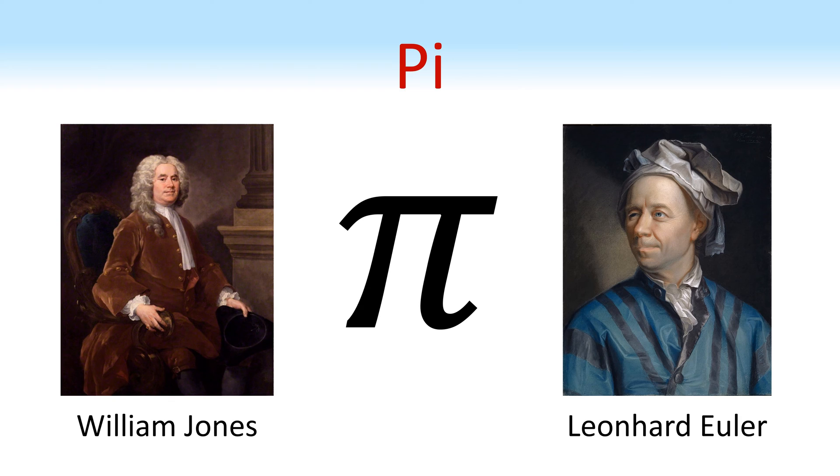The symbol we use for pi was introduced by the Welsh mathematician William Jones in 1706, but it was the prolific Swiss mathematician Leonard Euler who popularised the symbol later in the 18th century. Since then, pi has been the symbol we all know and love.